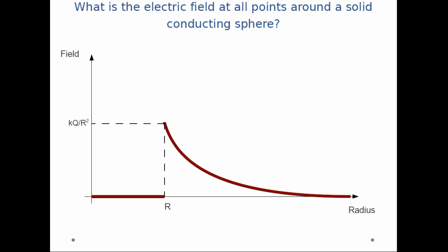And so if we were to plot the electric field as a function of distance from the center of the sphere, we notice that it starts off at 0, and the moment it reaches the very edge of the sphere, it jumps up to kq over capital R squared.